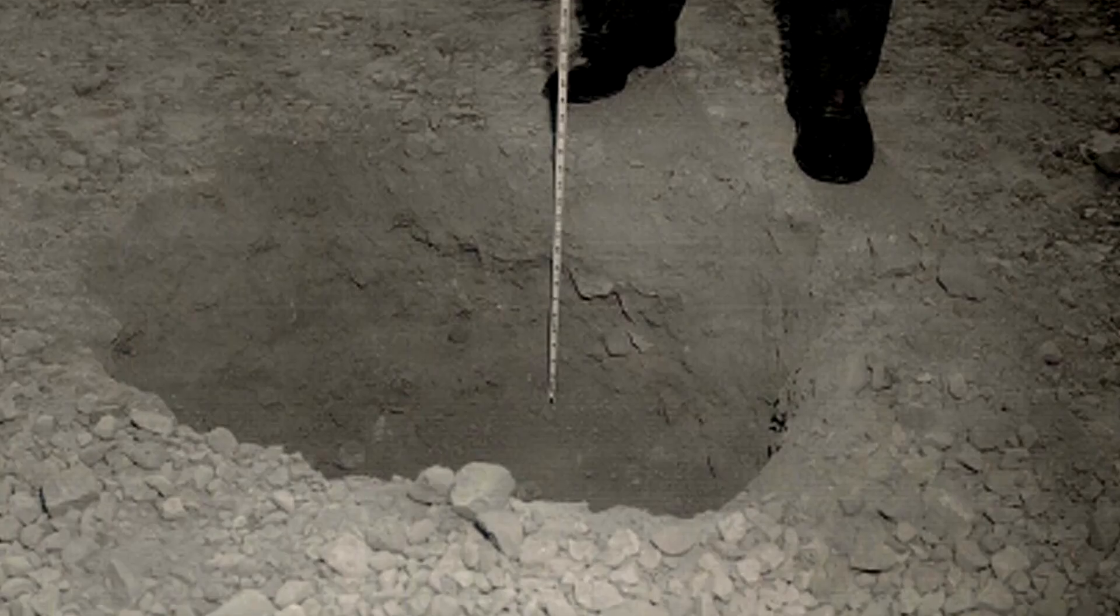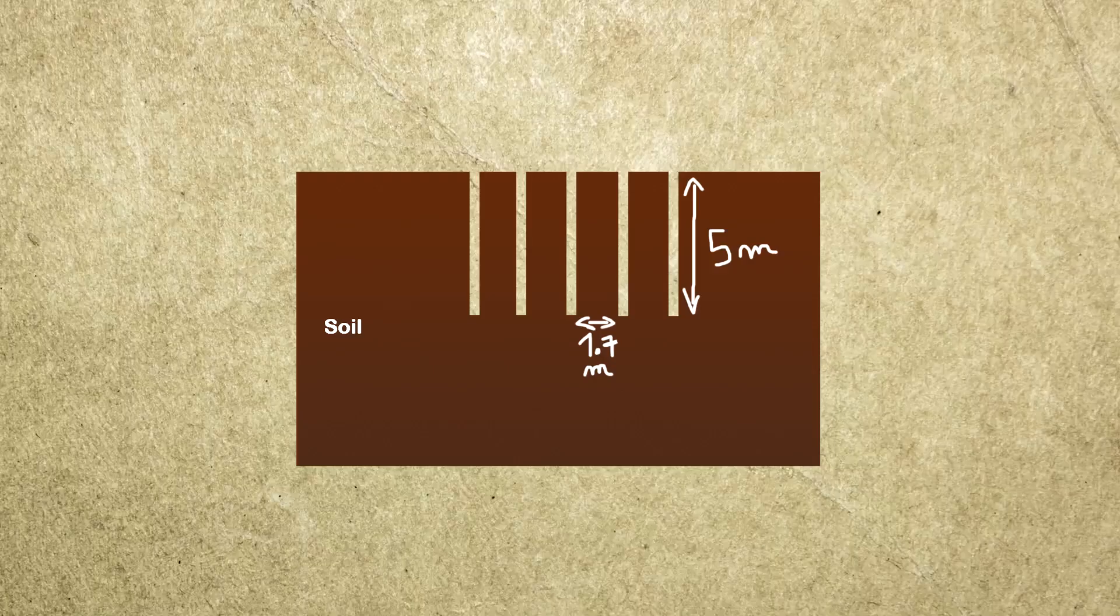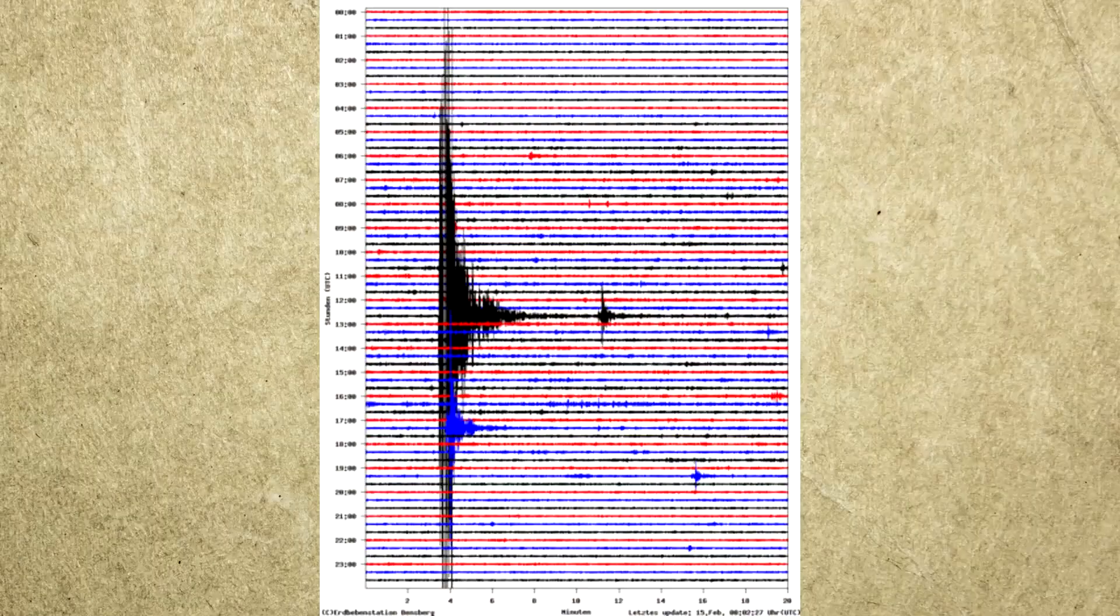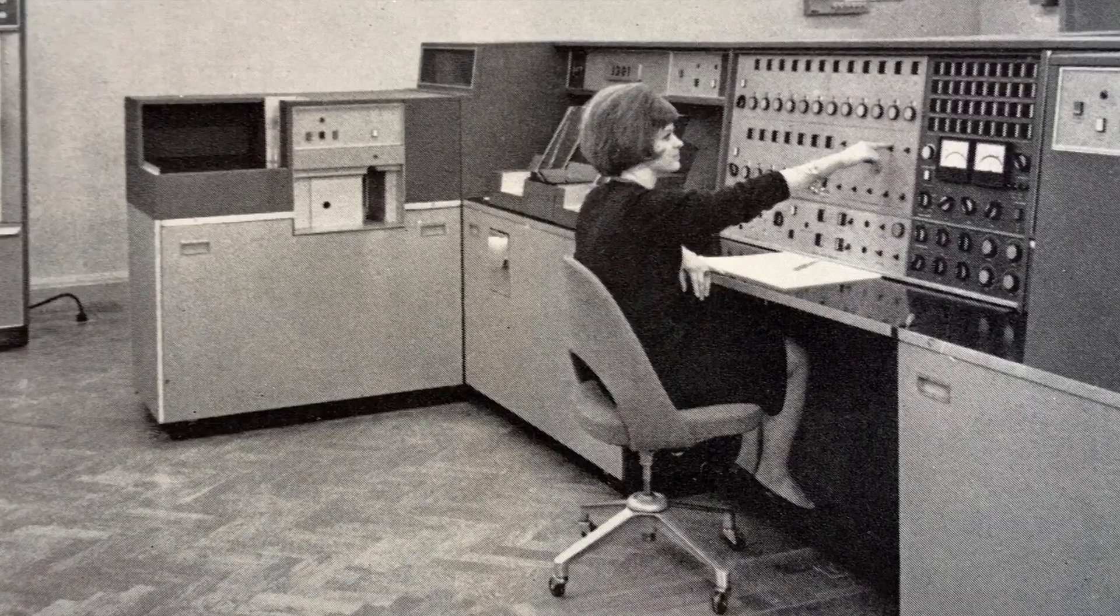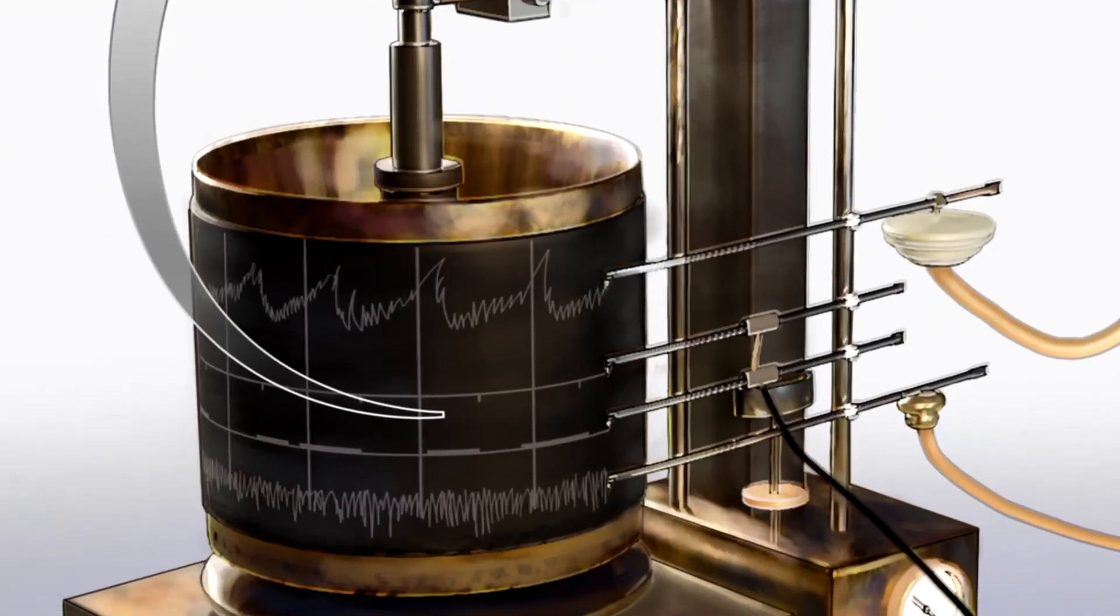They found that regularly spaced holes in the ground, about 1.7 meters apart, might affect the wave propagation. To check out whether the simulation worked, they had to try it in the real world.